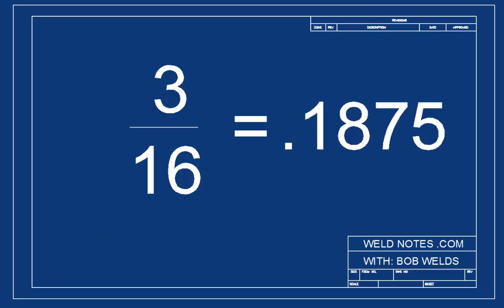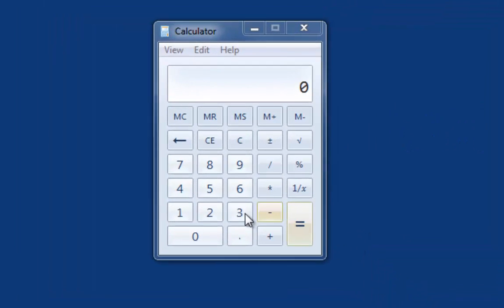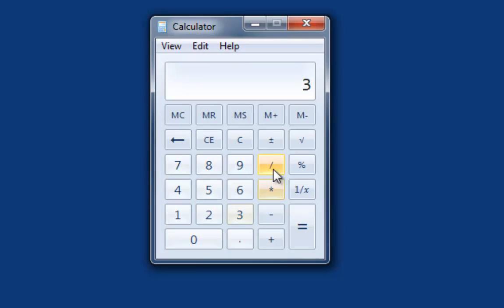3 sixteenths is equal to 0.1875. Here's what I did. Enter 3 into the calculator, then I press divide by, and then I type 16. When I press equals, there's the answer, 0.1875.